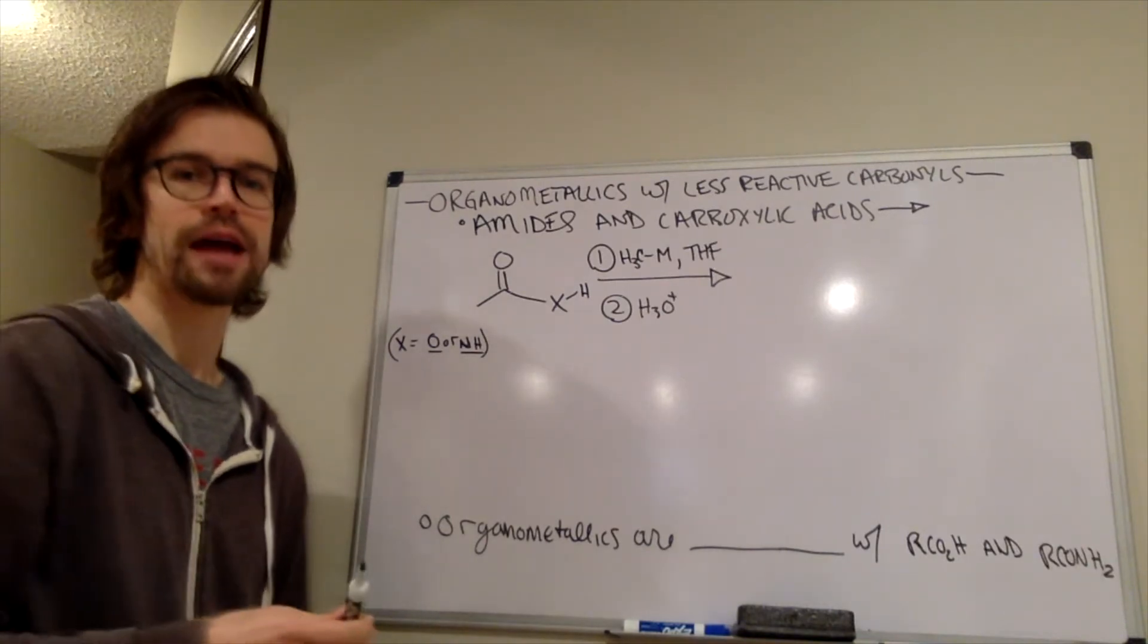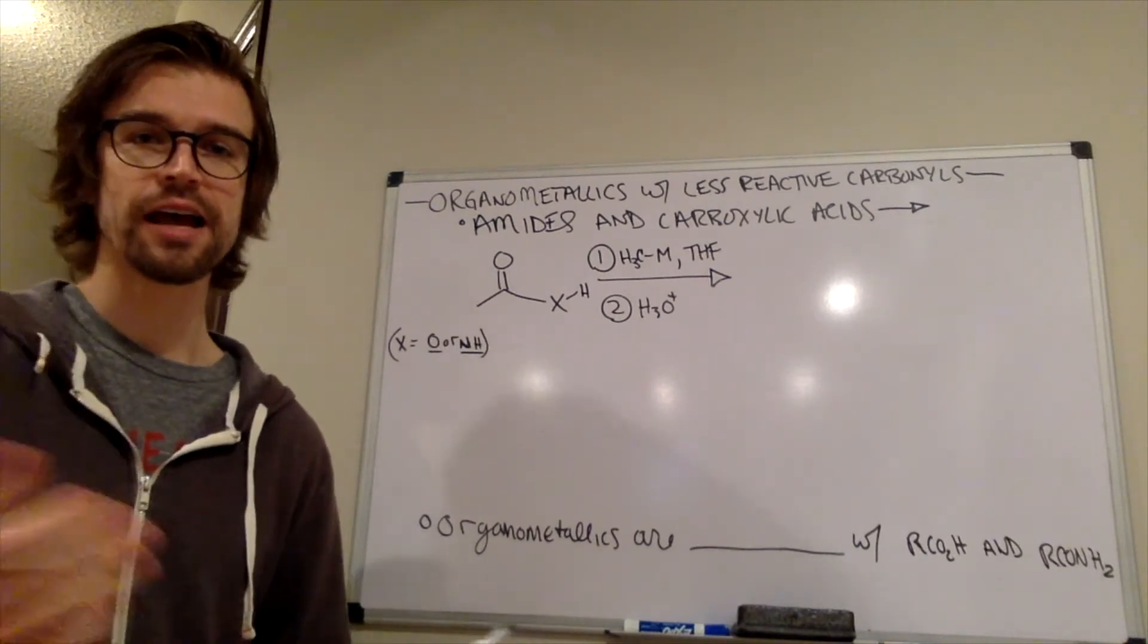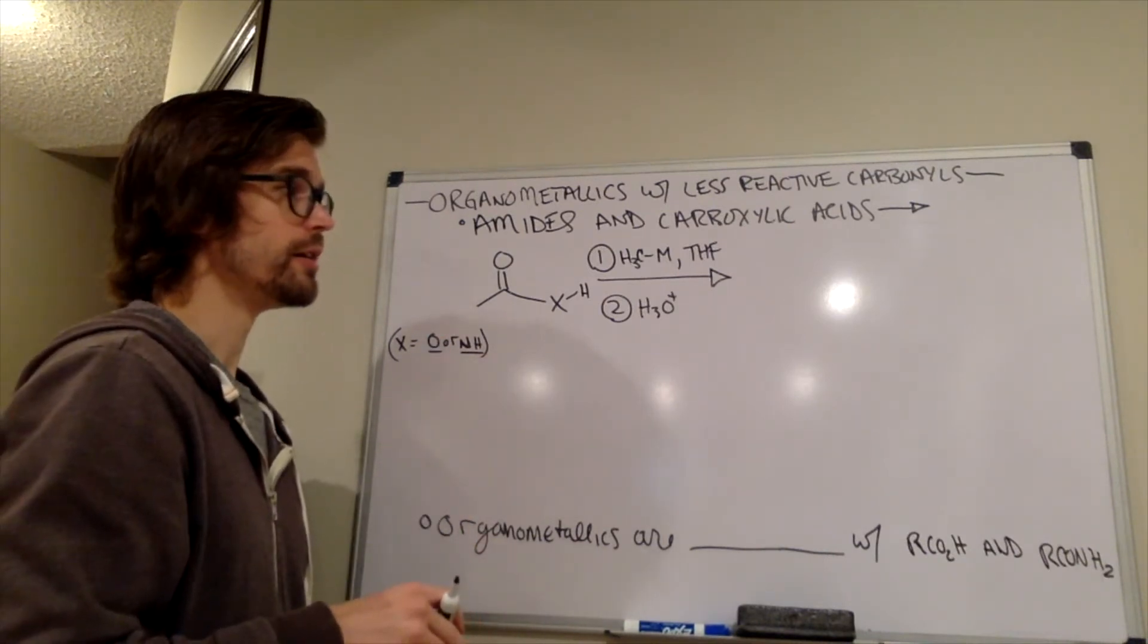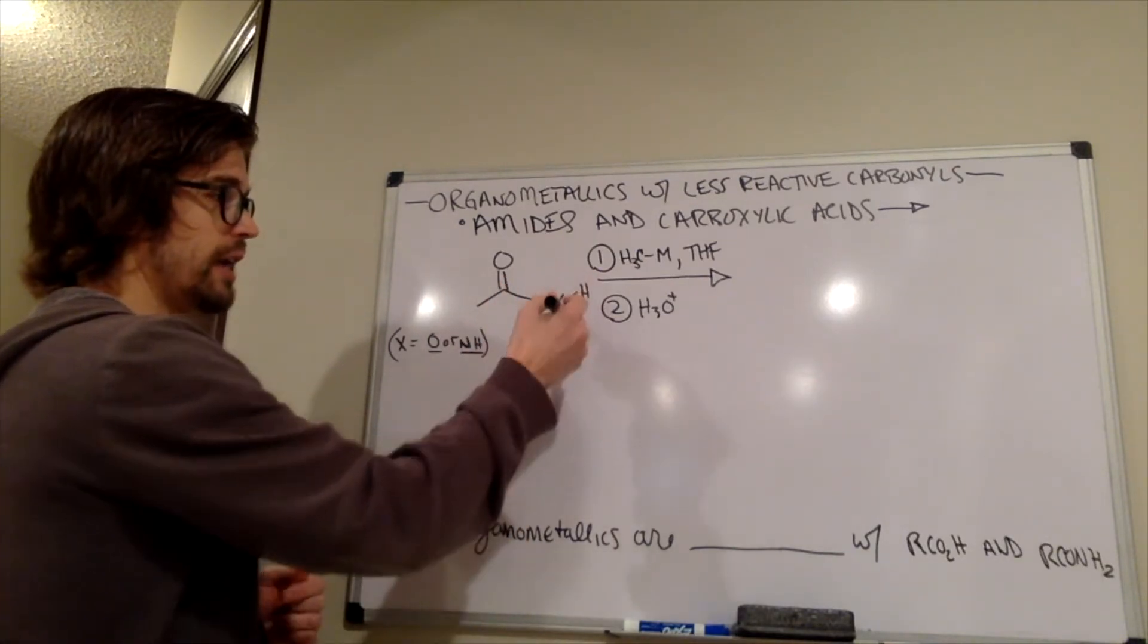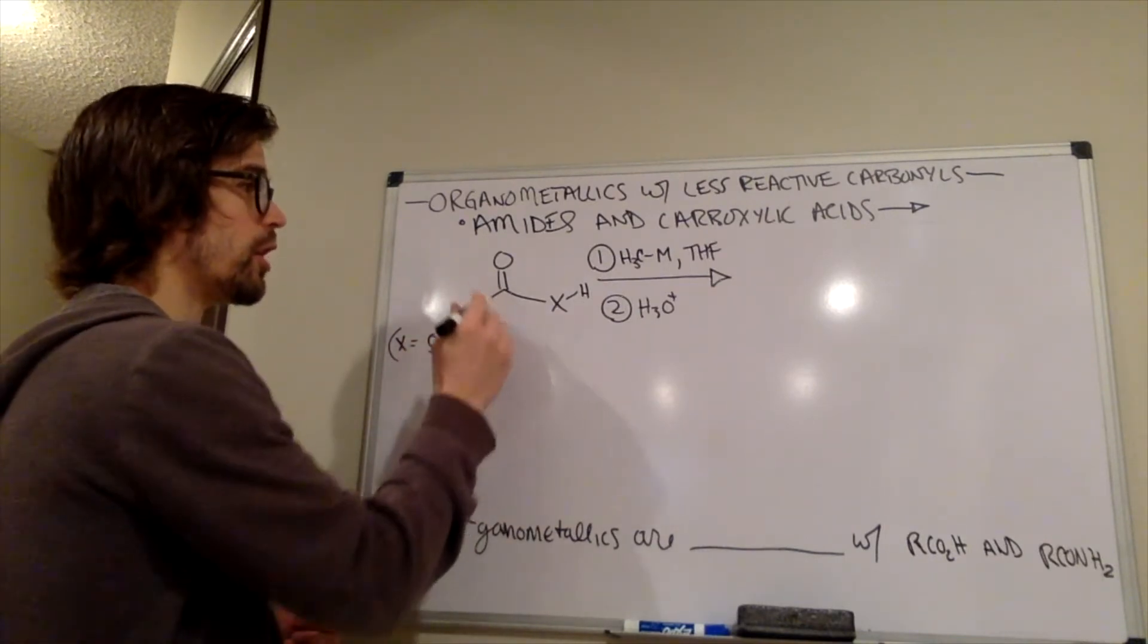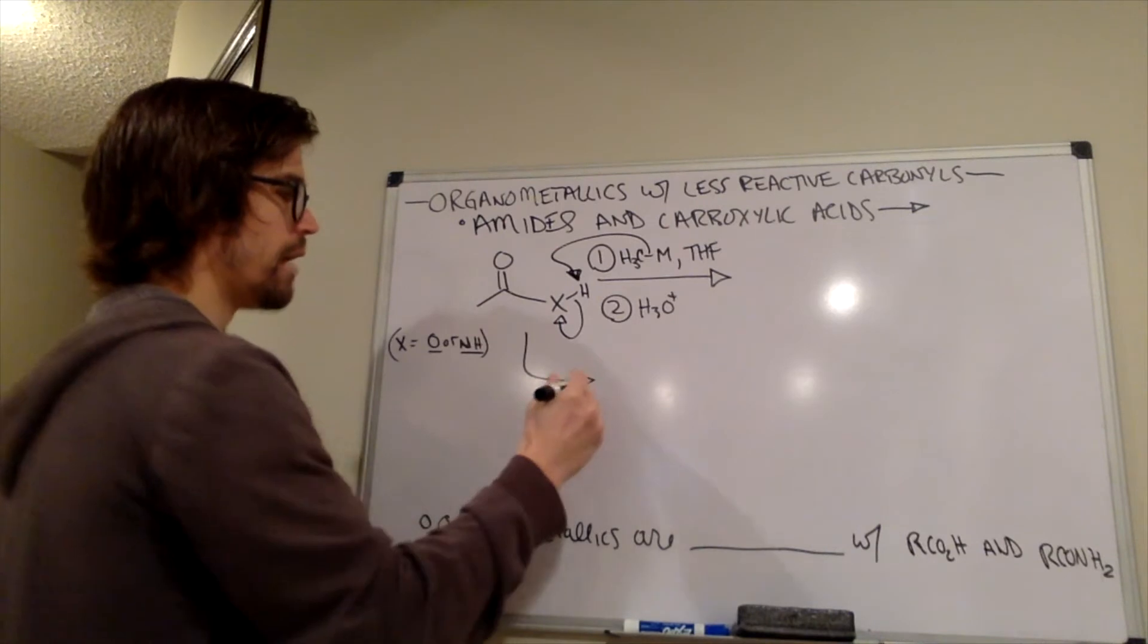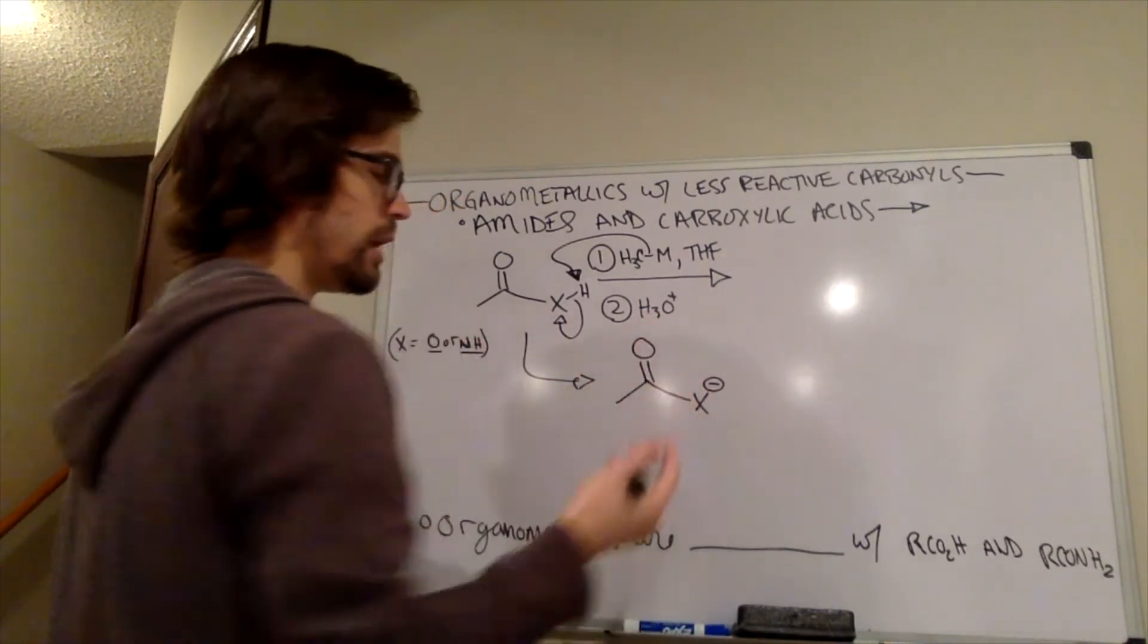And it turns out that, yeah, acidic protons or what will happen acid based chemistry would happen instead of the nucleophilic addition chemistry that we would want to happen. And that's what's going to happen here essentially. So essentially our organometallic reagents is either going to deprotonate the NH or the OH instead of adding to the carbonyl carbon. So we can kind of draw that happening like this. And that would produce this deprotonated intermediate.